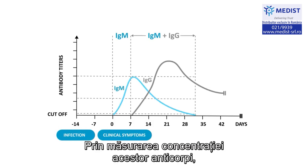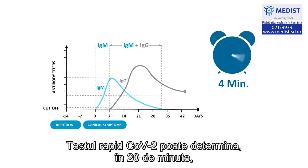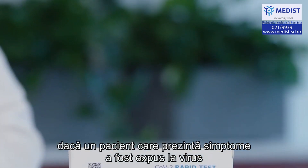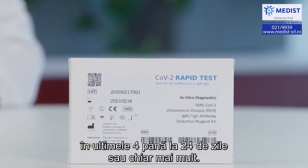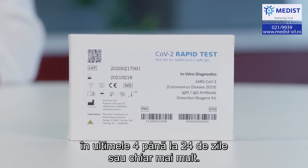By measuring the concentration of these particular antibodies, the Cov2 rapid test can determine in 20 minutes whether a patient experiencing symptoms has been exposed to the virus within the past 4 to 24 days or longer.